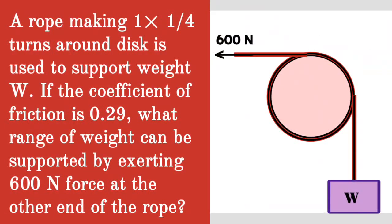Given question: a rope making one and a quarter turns around a disc is used to support a weight W. If the coefficient of friction is 0.29, what range of weight can be supported by exerting 600 N force at the other end of the rope?